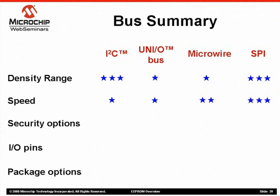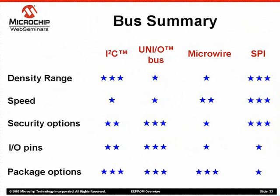Regarding speed, SPI has the fastest available bus speed, followed by Microwire; I2C and UNEO bus are the slowest. For security, SPI and UNEO protocols have the widest range of options, featuring both software and hardware data protection schemes. I2C features only hardware write protect, and Microwire has the fewest data protection options. The UNEO bus is clearly the best in terms of IO pins used, requiring only one microcontroller pin, while I2C requires two, and Microwire and SPI require at least four. I2C, Microwire, and the UNEO bus all score well in the small package category, while SPI parts require slightly larger packages in most densities.